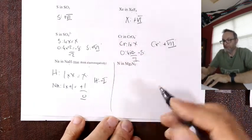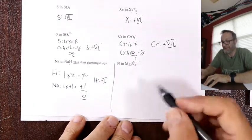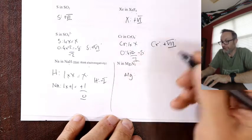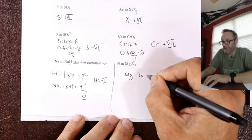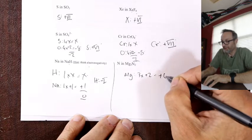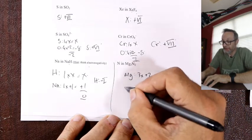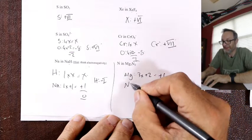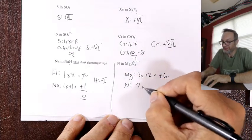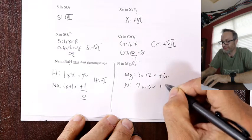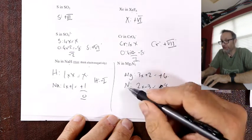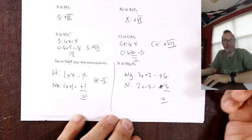For Mg₃N₂: magnesium is group two, makes a plus two ion. Three times plus two is plus six. Nitride makes a minus three. Two times minus three equals minus six. It adds up to zero — nitrogen has a minus three oxidation state in this ionic compound.